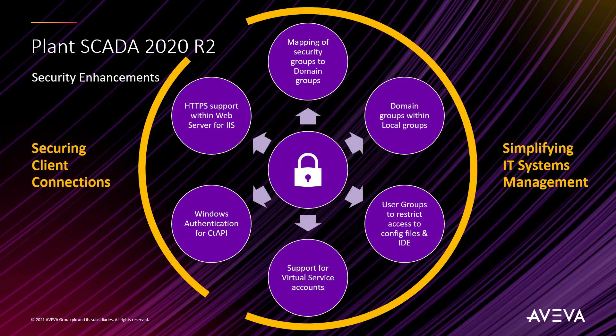Looking across the security improvements briefly, these fall into one of two main categories. The first is simplifying how Plant Skater fits and is implemented within your customers' business networks and an overall business environment, making their job easier. The second is enhancing our internal security between different Plant Skater components and our interfaces.